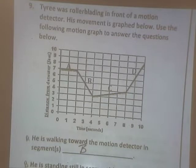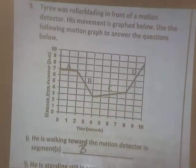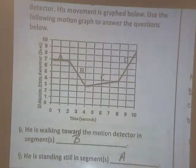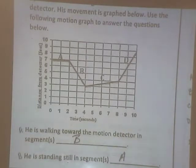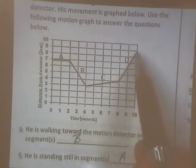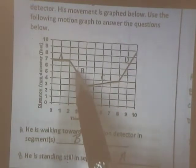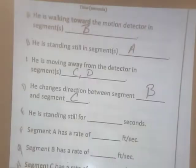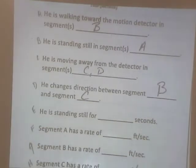And he's standing still in which second? A. That's A, right? He stays 7 feet away for a couple of seconds. He's moving away from the detector. C and D, right? He changes direction between segments blank and segments blank. Changes direction. B and C, right? B is going towards it and then C is going away from it. Standing still for how many seconds? Two seconds.